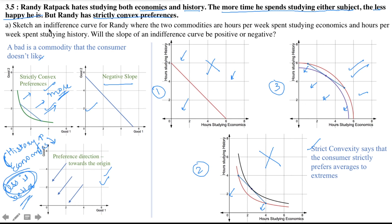After sketching the indifference curve for Randy, the second part of part A asks whether the slope of the indifference curve will be positive or negative — which we have already answered: the slope would be negative. In order to increase his hours of studying history, he has to reduce his hours of studying economics, and due to this negative relationship, the slope would be negative.